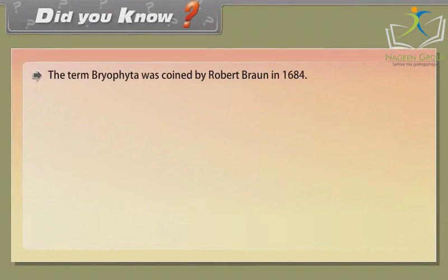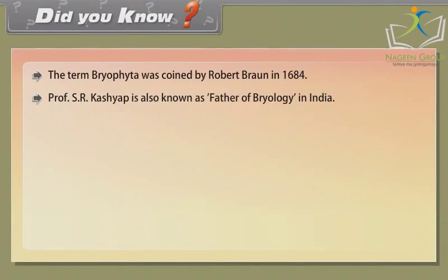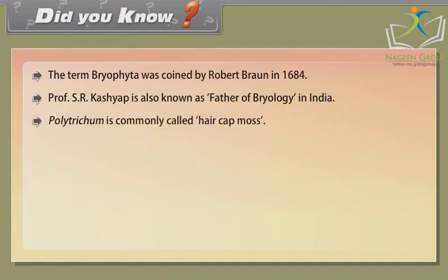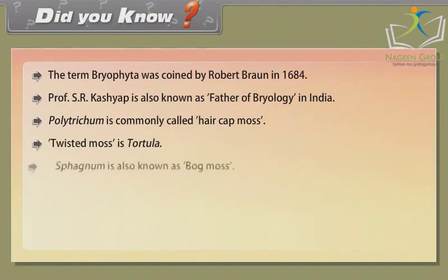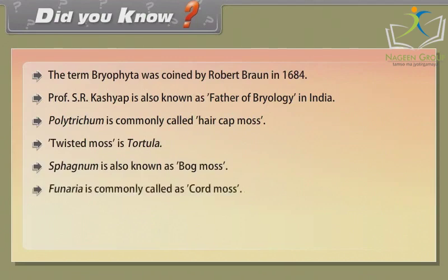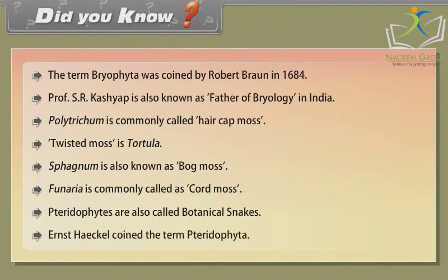Did you know? The term Bryophyta was coined by Robert Braun in 1864. Professor S.R. Kashyap is also known as the Father of Bryology in India. Polytrichum is commonly called hair cap moss. Twisted moss is Tortula. Sphagnum is also known as bog moss. Funaria is commonly called cord moss. Pteridophytes are also called botanical snakes. Ernst Haeckel coined the term Pteridophyta.